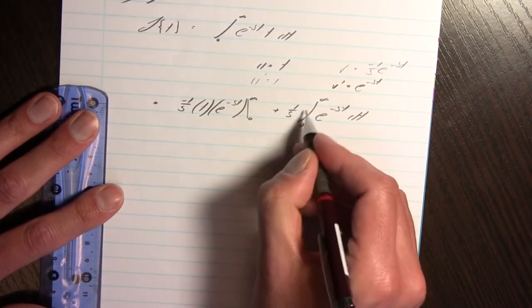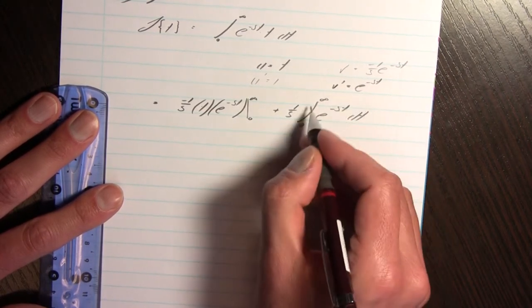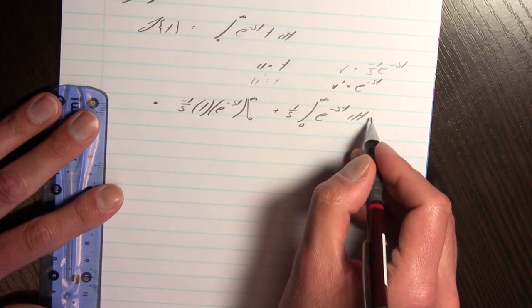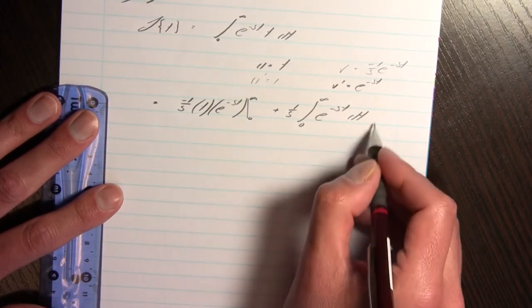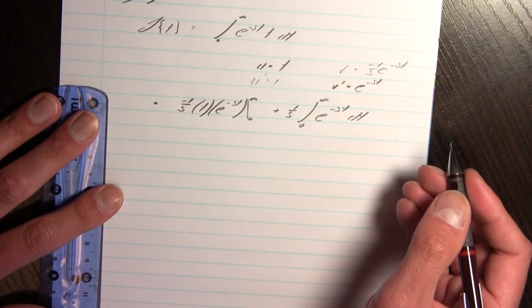Now what is this? This is the Laplace transform of 1. We've just done it in the previous video. This is the Laplace transform of 1 and we know what the Laplace transform of 1 is. Well, this is 1 over s.